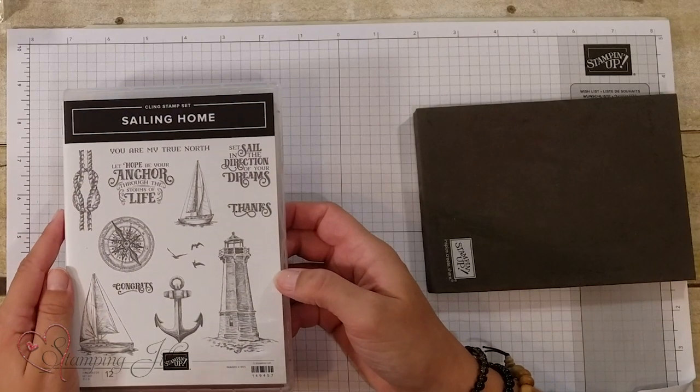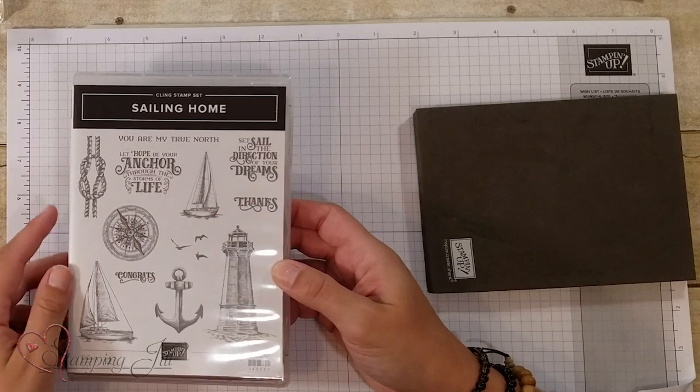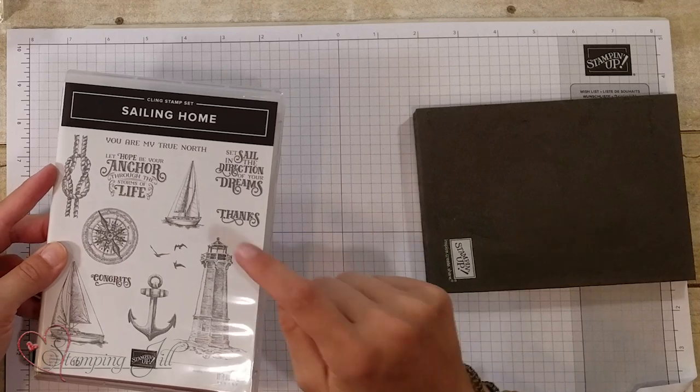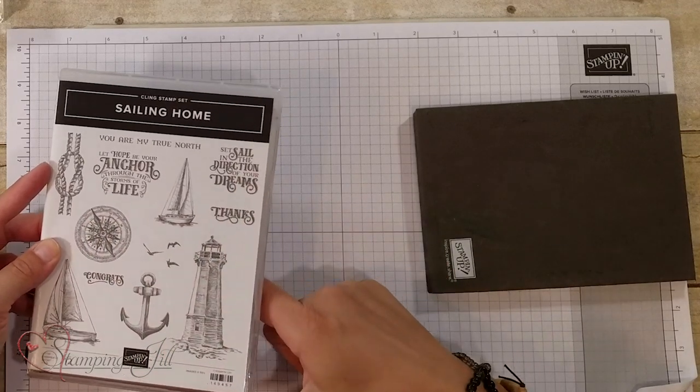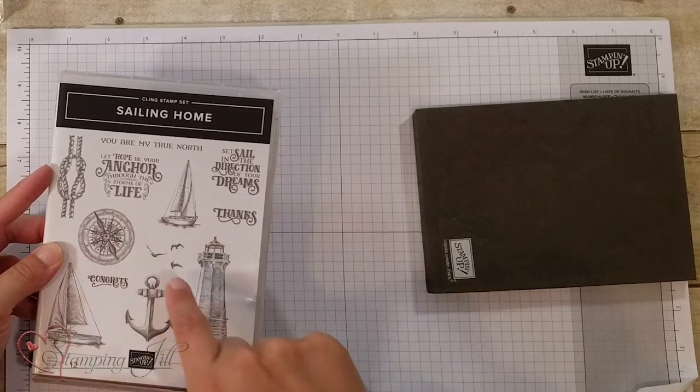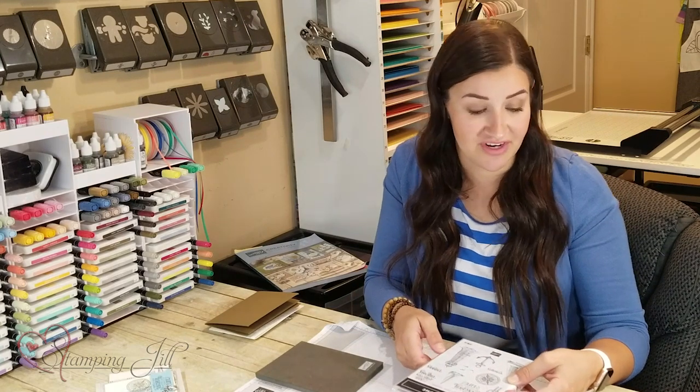Let me show you some products from the Come Sail Away suite that I'm using on the projects I made today. First is the Sailing Home Stamp Set. This is a clean stamp set with multiple pieces. I love the lighthouse and the sayings are so cute. This one is probably my favorite: Let hope be your anchor through the storms of life. There's also a thanks and congrats, so you can use this stamp set for a lot of different occasions.